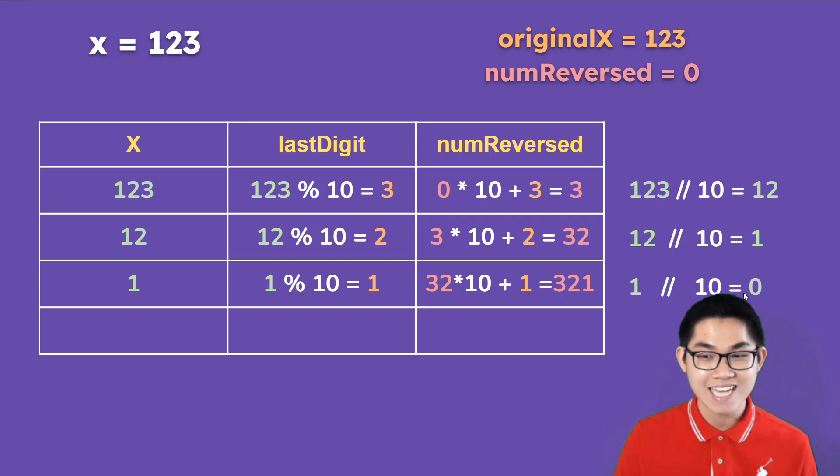And then we get rid of the last digit, so we end up with 0. So once you get 0 here, we're going to look at the final value in num reverse. And as you can see, 321 is not the same as the original x, which is 123. And this indicates that 123 is not a palindrome.